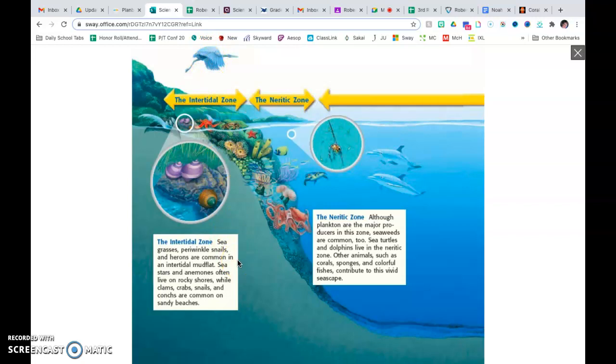Sea stars and anemones often live on the rocky shores, while clams, crabs, snails, and conchs are common on sandy beaches. So that is the intertidal zone.